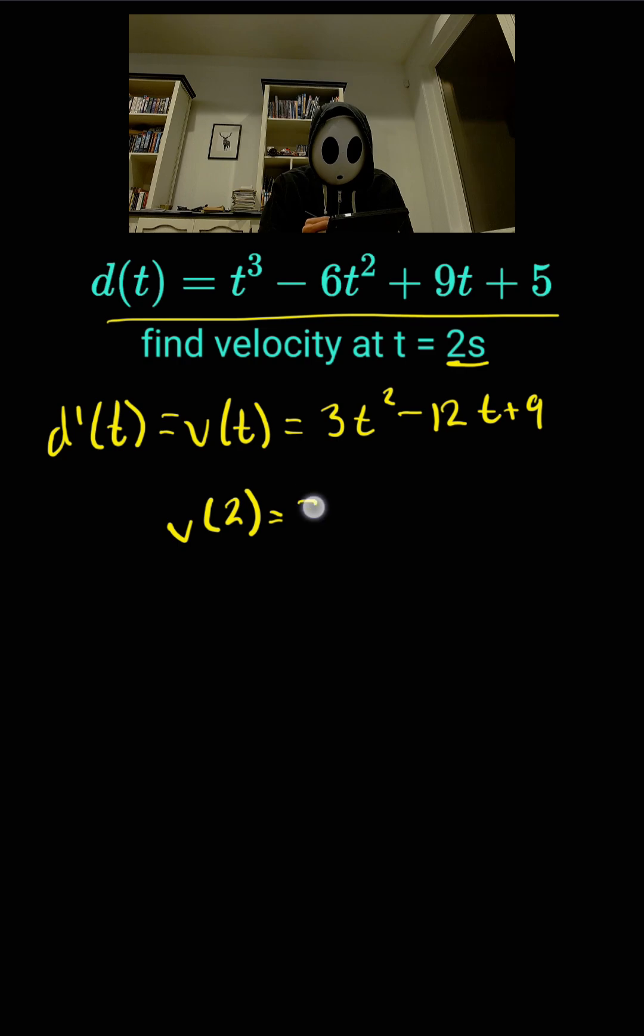So v of 2 equals 3 of 2 squared minus 12 times 2 plus 9. You can start simplifying.